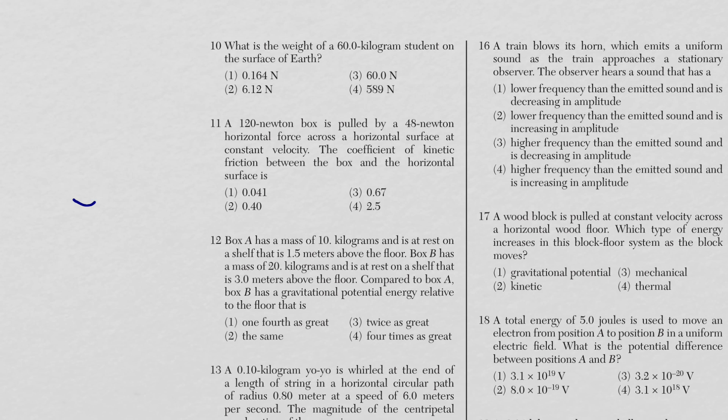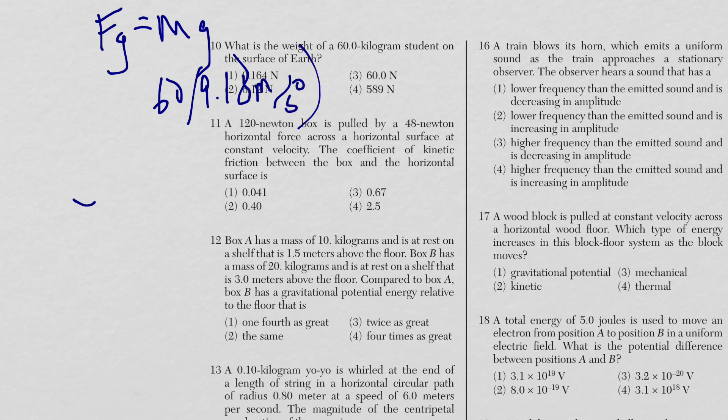Question 10: what is the weight of a 60 kg student on Earth's surface? Weight equals MG, where M = 60 kg and G = 9.81 m/s². Don't round G to 10 here — use your calculator. The answer is 589 Newtons.